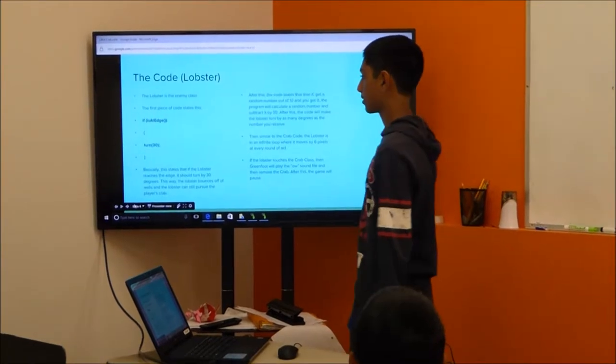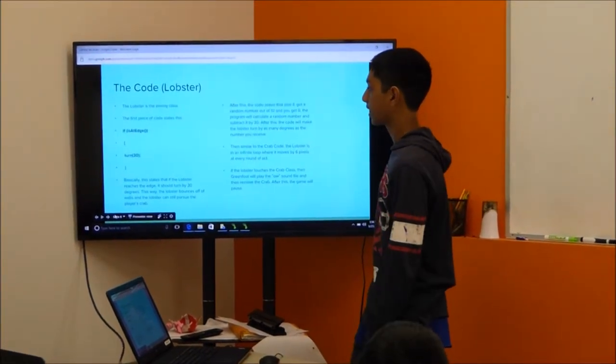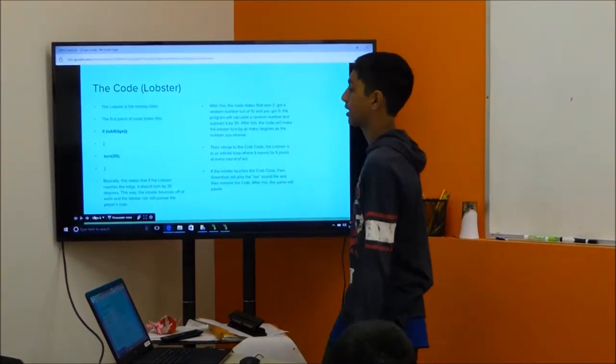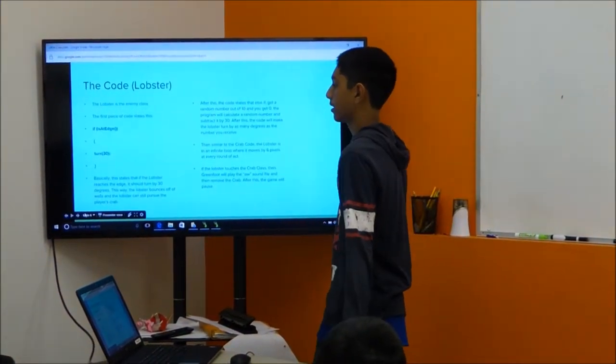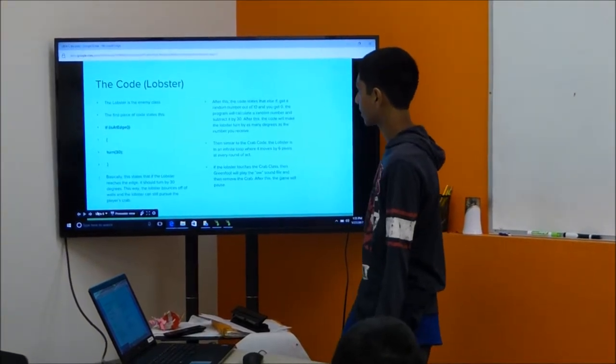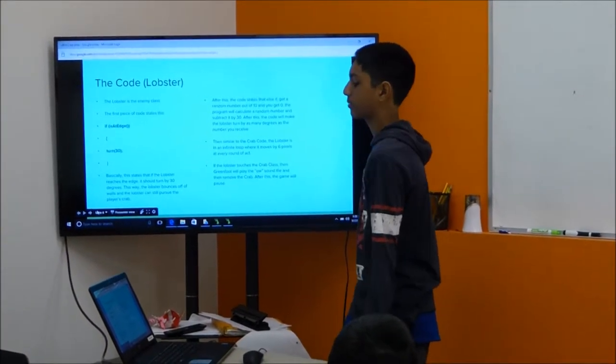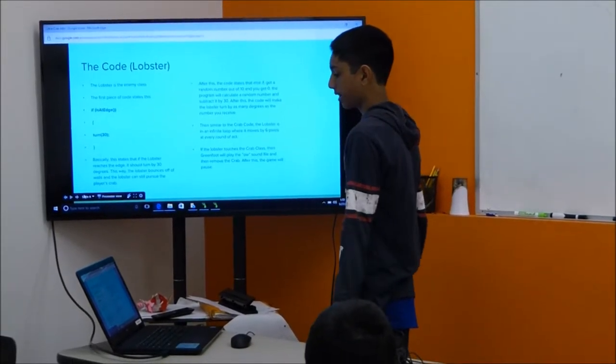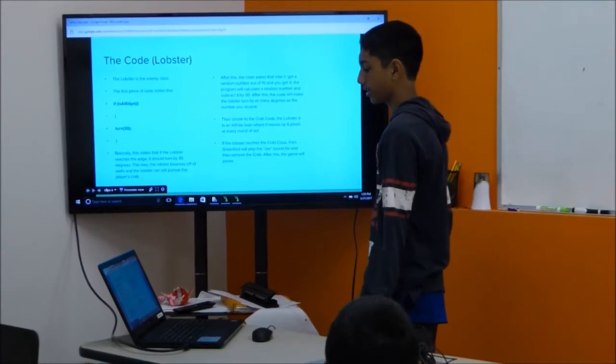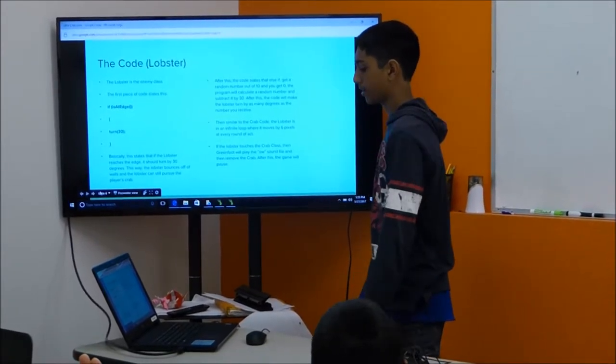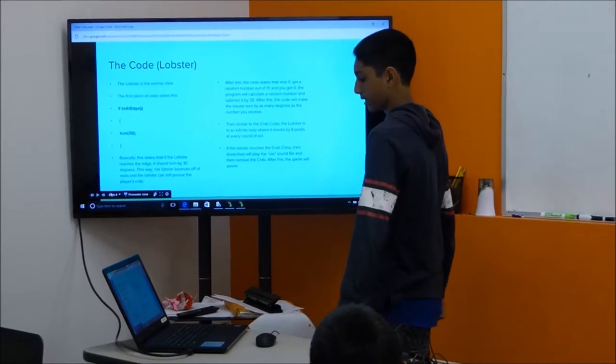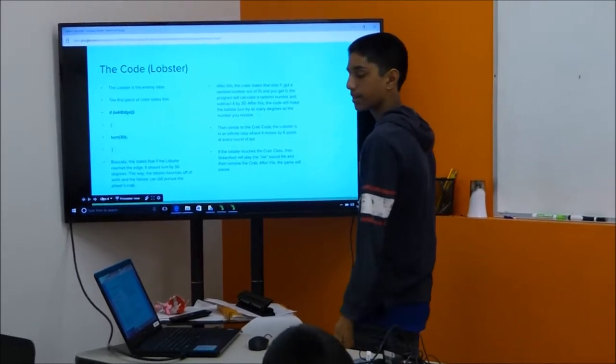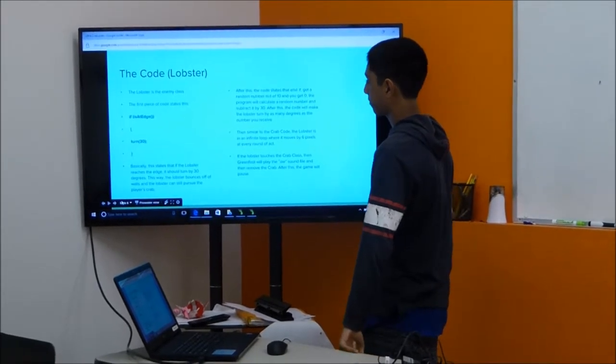And next is the lobster. The lobster is the enemy class. And this code basically states that if the lobster is at the edge of the world, it will rotate by 30. And then there's another random number generator. And if you get a random number out of 10, then the program will calculate another random number and subtract it by 30, this time out of 60. After this, the code will make the lobster turn by as many degrees as the number you receive.